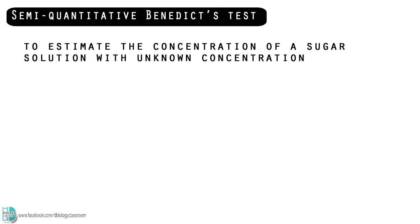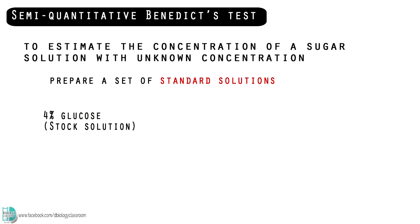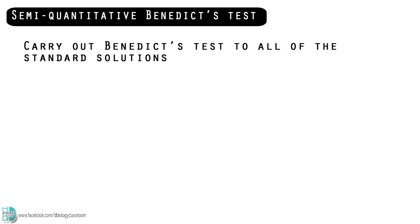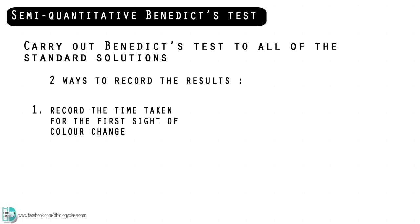If you want to estimate the concentration of a glucose solution, you can carry out the semi-quantitative Benedict's test. First, prepare a set of standard solutions using a stock solution of known concentration. For example, if you were given a stock solution of 4% glucose, you can use serial dilution to prepare 2%, 1%, 0.5%, and 0.25% glucose. You should have at least 5 standard solutions. Carry out Benedict's test on all 5 solutions. There are 2 ways you can record the results: you can either record the time taken for the first sign of color change, or record the final color change after a fixed time.